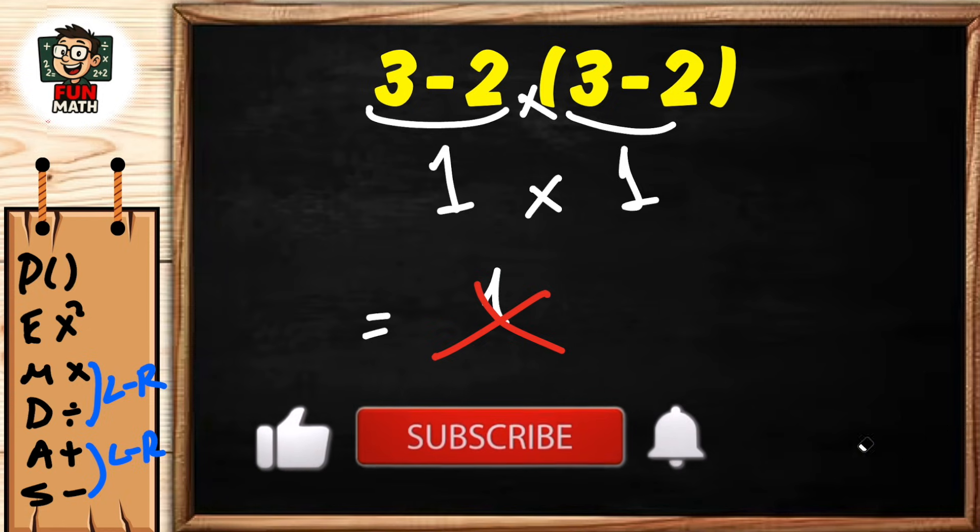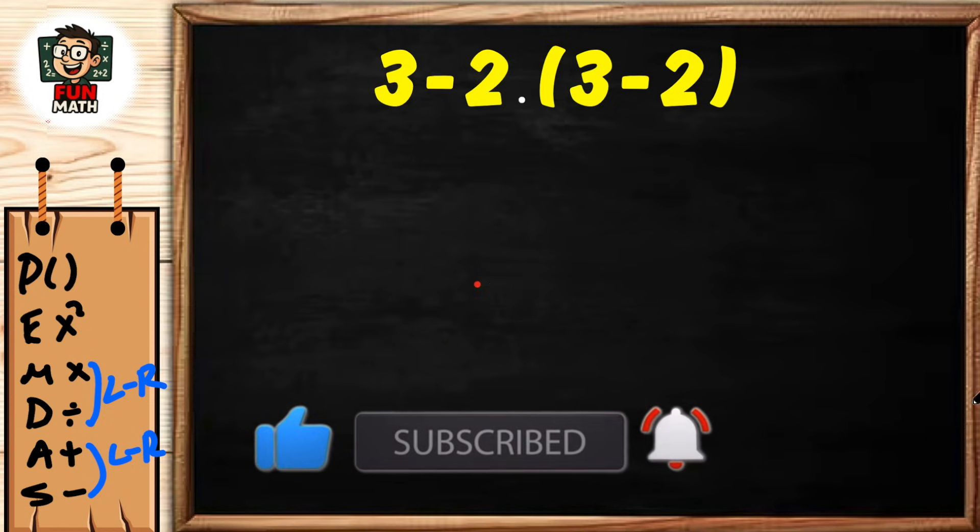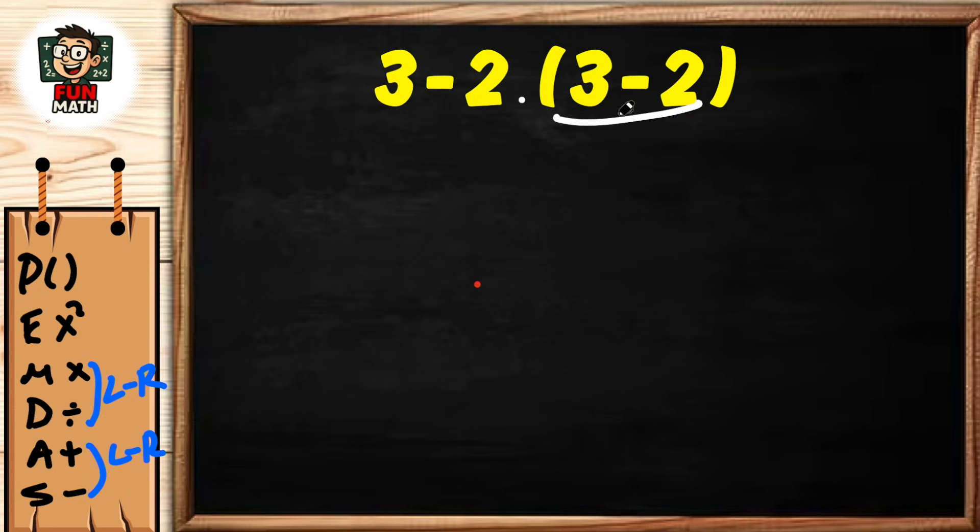Let's apply this to resolve our equation. First, parentheses: (3 - 2) = 1. We have hidden multiplication in 3 - 2(3 - 2). Now, multiplication: 2 × 1 = 2.